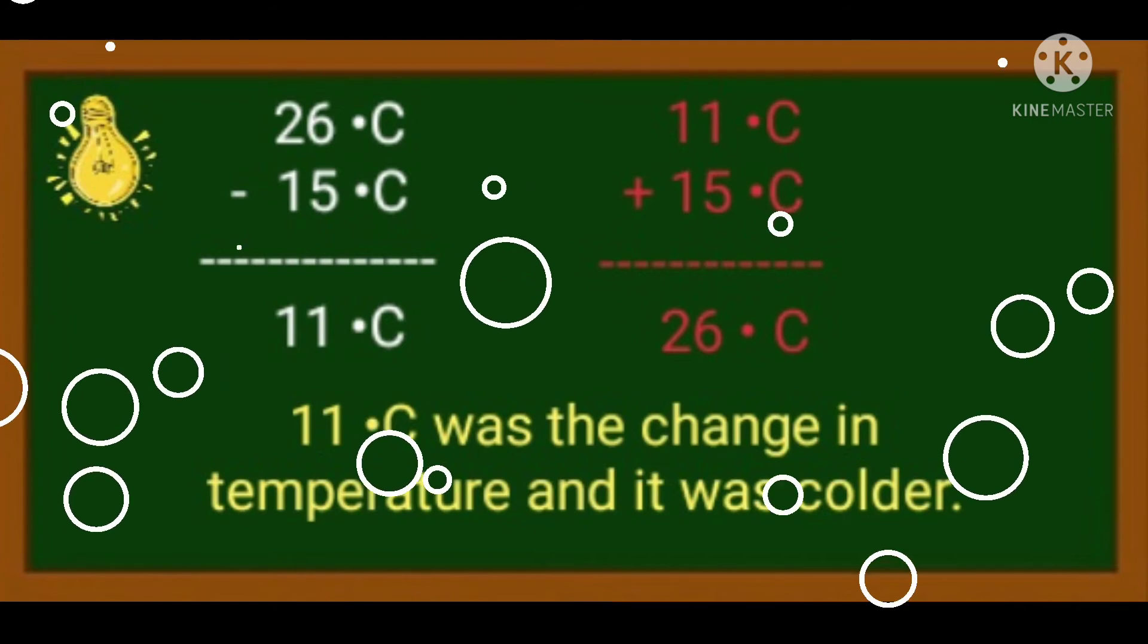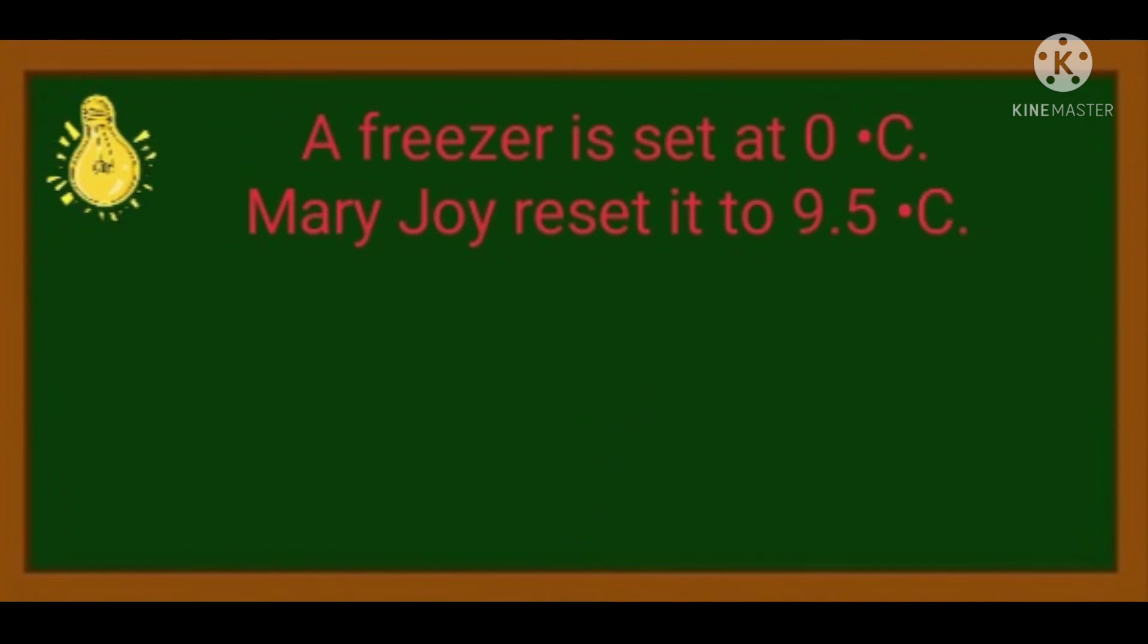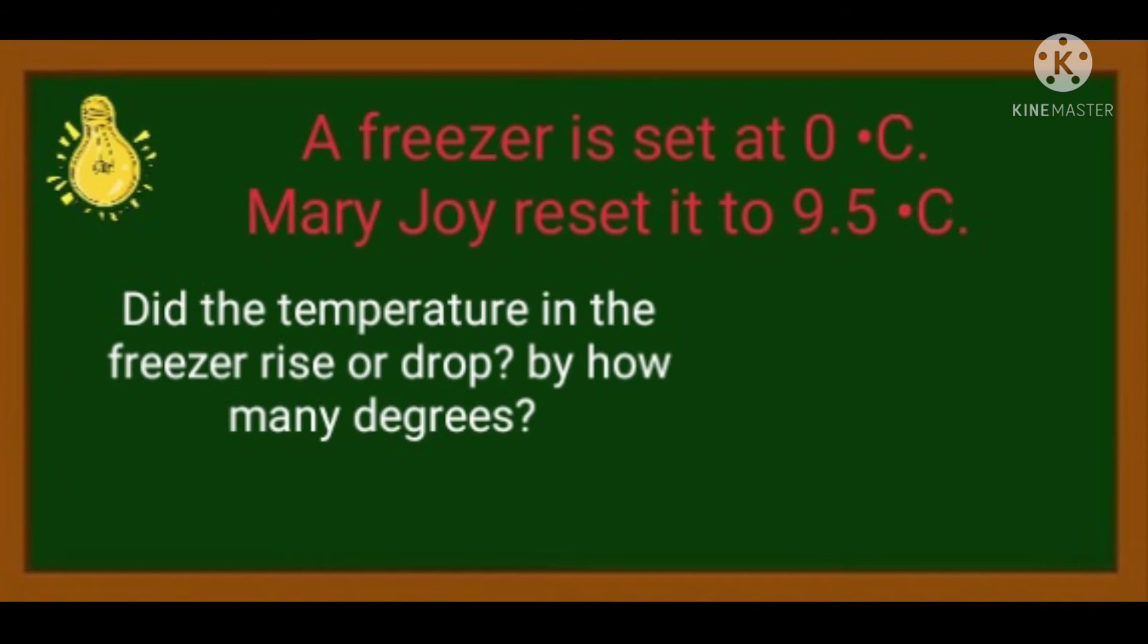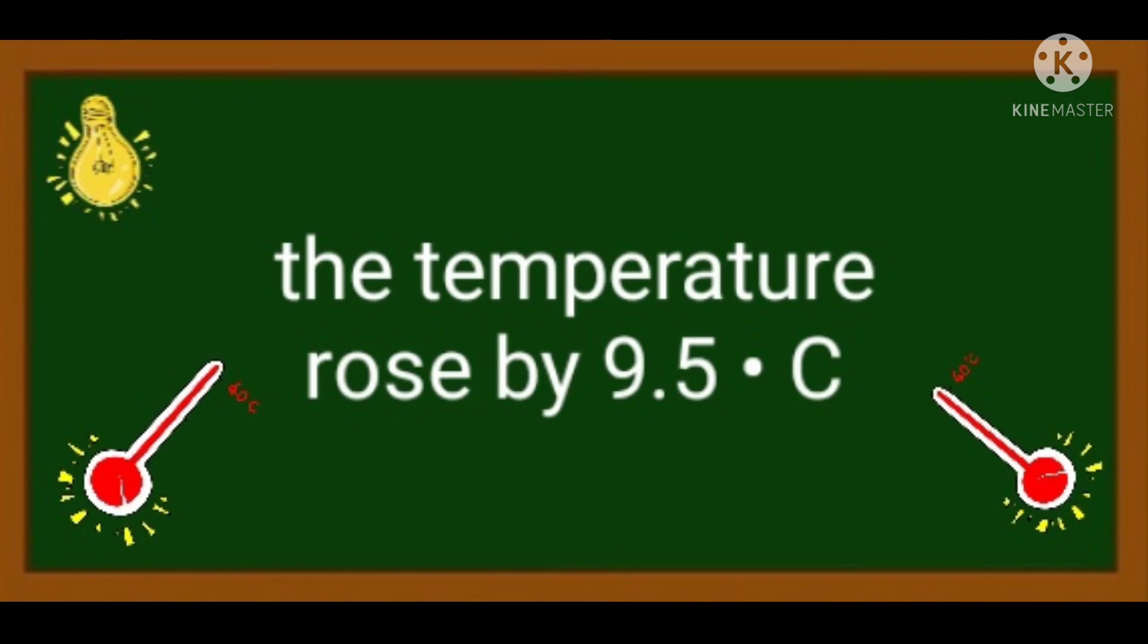Let's try this number 2. A freezer is set at 0 degrees Celsius. Mary Joy reset it to 9.5 degrees Celsius. Did the temperature in the freezer rise or drop? By how many degrees? Okay, isolve na natin. Alam naman natin na ang 0 degrees ay yung kanyang freezing point. So, yun yung simula. Then, naging 9.5 daw after maireset ang freezer. So, we're just going to add 0 degrees Celsius plus 9.5 degrees Celsius. The answer is 9.5 degrees Celsius. So, the temperature rose by 9.5 degrees Celsius.